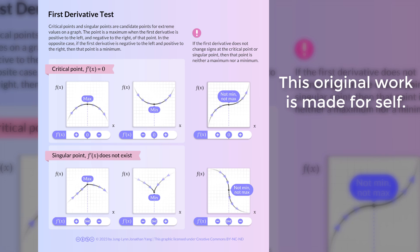The first derivative test uses the first derivative to classify whether a critical point or a singular point on a graph is a maximum or a minimum.